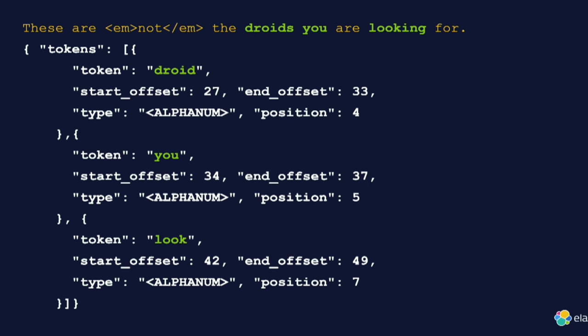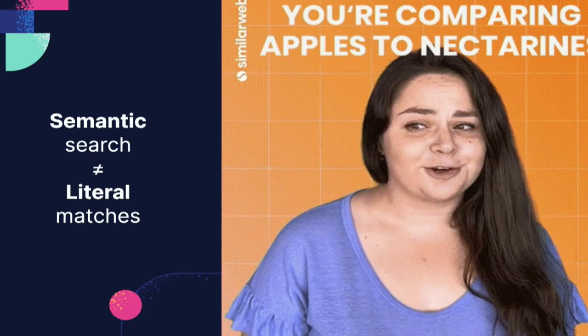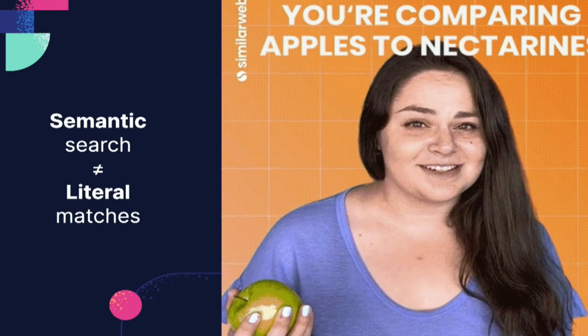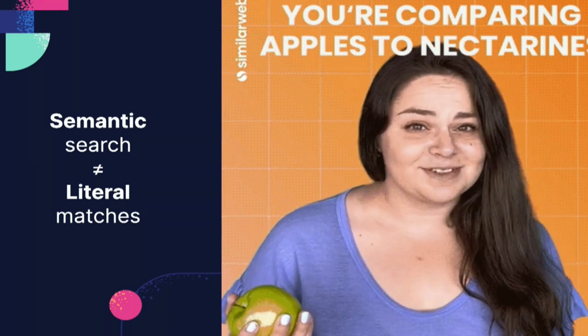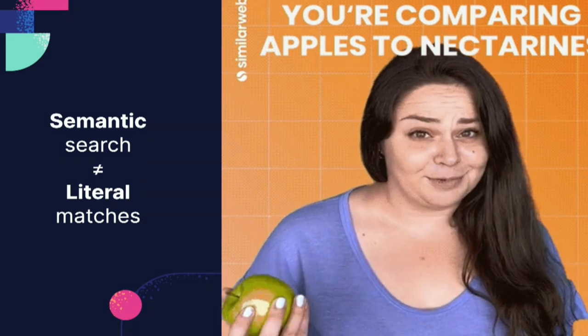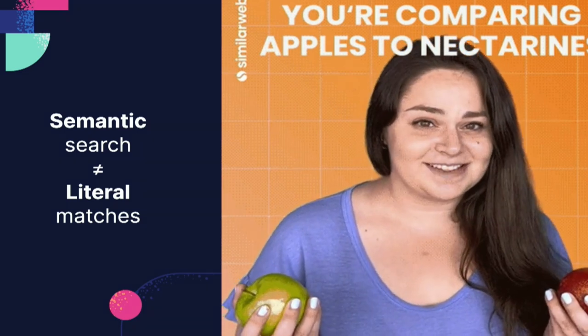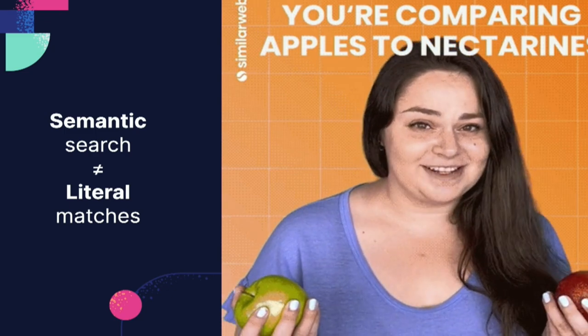If I'm looking for 'machine' instead of 'droid,' it's not going to work because 'machine' produces a token named 'machine,' not 'droid,' so it won't match. You can use synonyms in Elasticsearch to fix that, but there are now better ways to solve it using semantic search, which is totally different from literal token-by-token search.